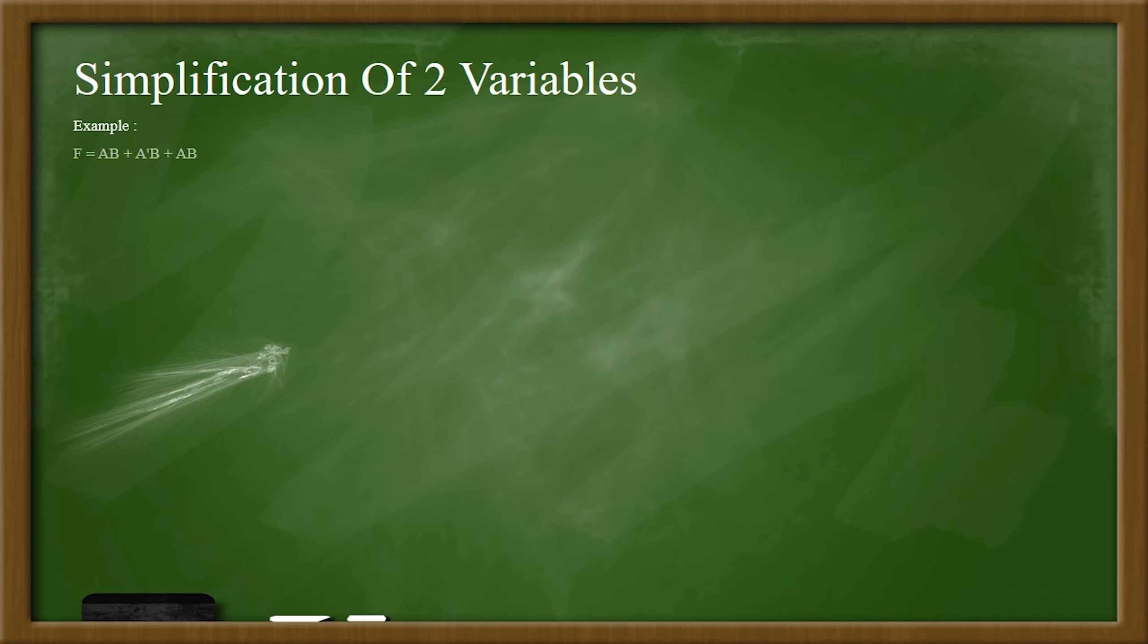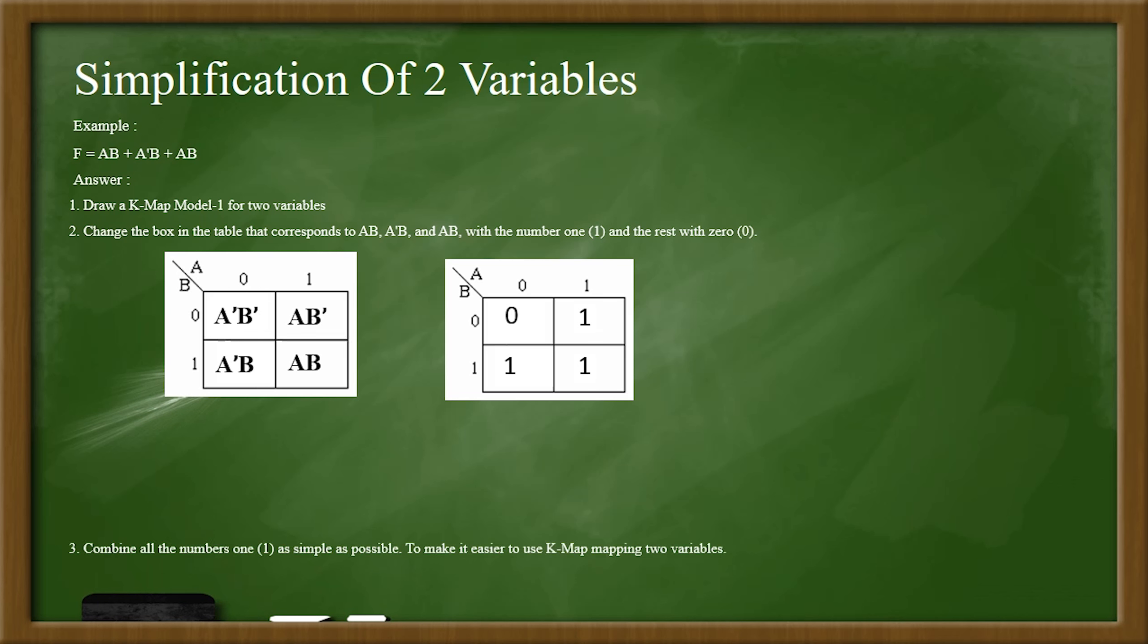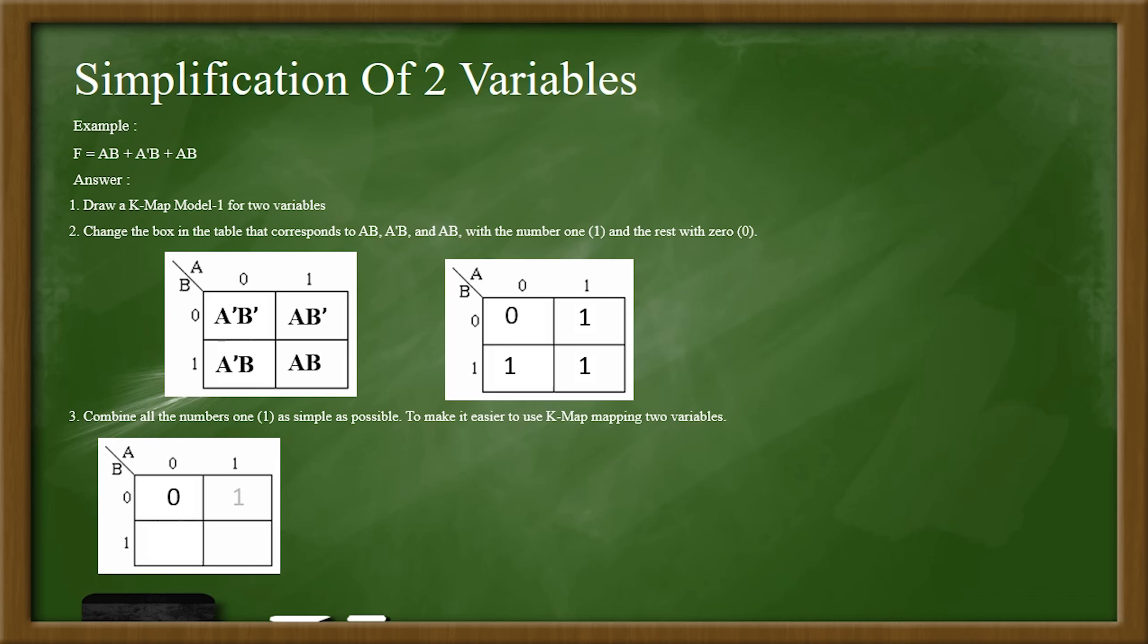Here we have some simplification using Karnaugh map. First we have the two variable simplification. We draw the map, we fill it with one, and then we group it.